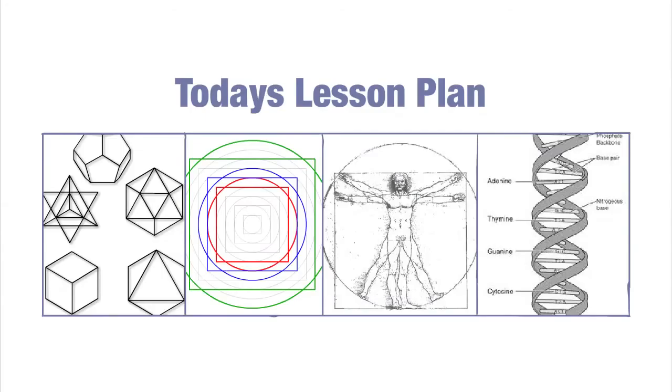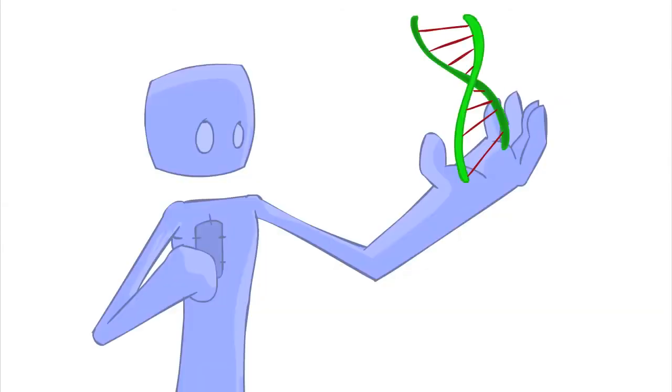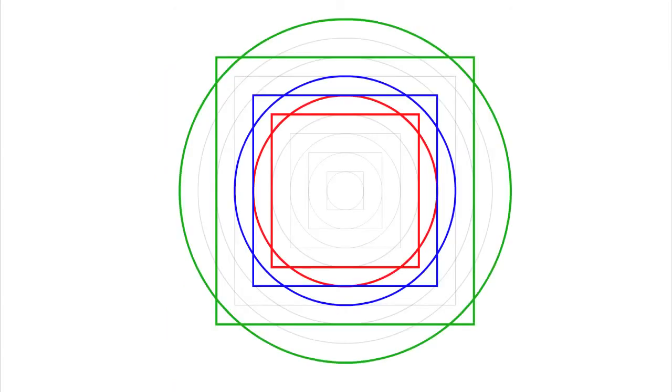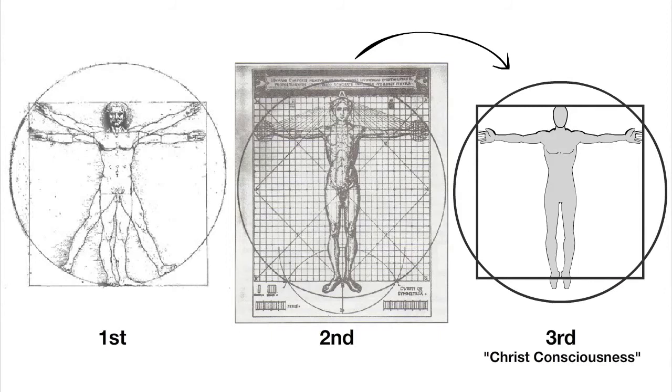For the last portion of today's lesson, we're going to talk about some recent findings in modern science. As we just saw in the geometry, we are currently in a disharmonic state of being, but we are just about done with it. In doing so, we are moving into a new state of being. We are transferring from the second level of consciousness to the third, also called Christ consciousness.